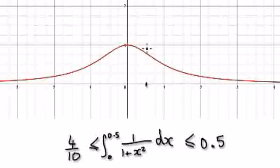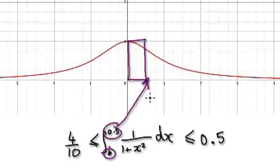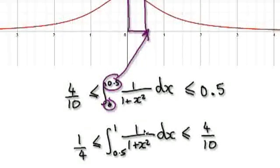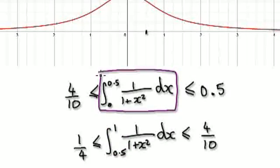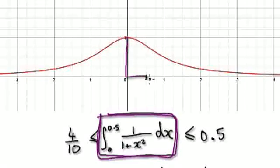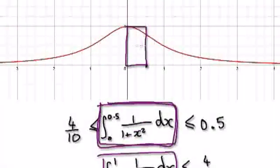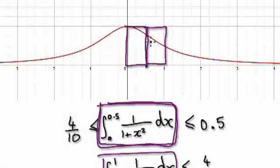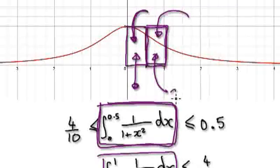Now we are going to split up into two different parts. The first part would be from zero to a half, and then the other one would be from a half to one. So the biggest and lowest possible values: this bit here is us looking at this bit, and then down here, this bit is us looking at this here. Work out the biggest possible value and the lowest possible value for each part.